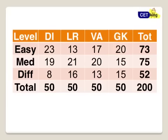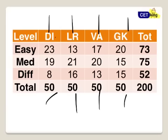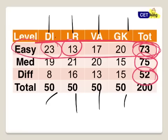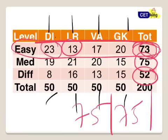This is a very important slide. I want you to sit with pen and paper so that you can take notes, because this will be very important for you once you start your preparation. This slide gives you the overview about the importance of the topic versus their level of difficulty. DI 50 questions, logic 50 questions, verbal 50 questions, GK 50 questions. Out of 50, 23 questions in DI were easy — almost 50% of the paper will be easy. Total 73 questions were easy in the paper out of 200, 75 medium and 50 difficult. So on an average you can expect 75 easy, 75 medium, 50 difficult.